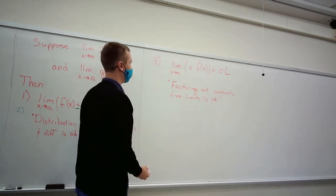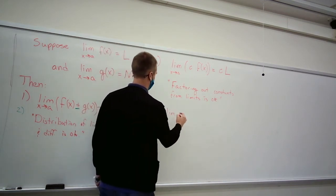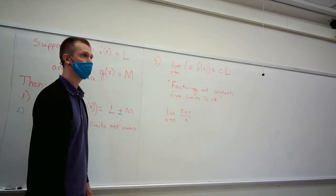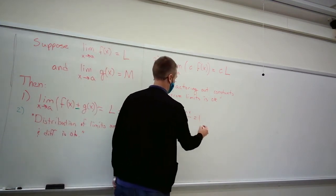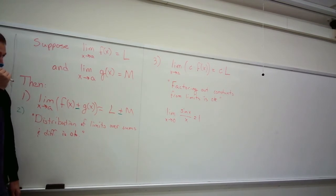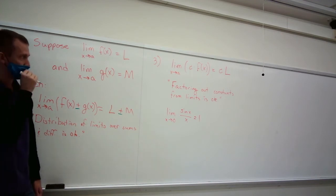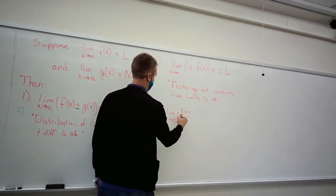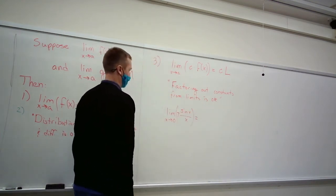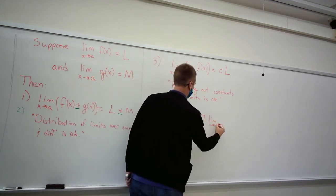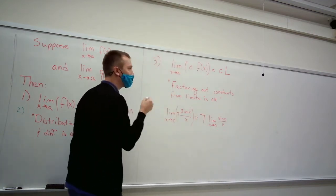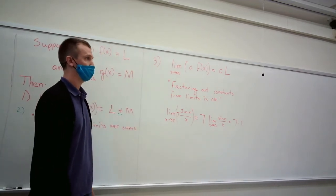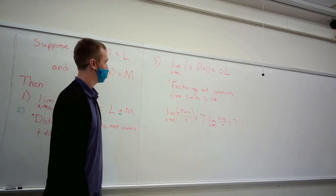For example, we found that the limit of sine(x)/x as x goes to 0 is 1. What if I take 7 times that function? By law 3, I can immediately factor out the 7: the limit of 7·sine(x)/x equals 7 times the limit of sine(x)/x, which is 7 times 1, which is 7.